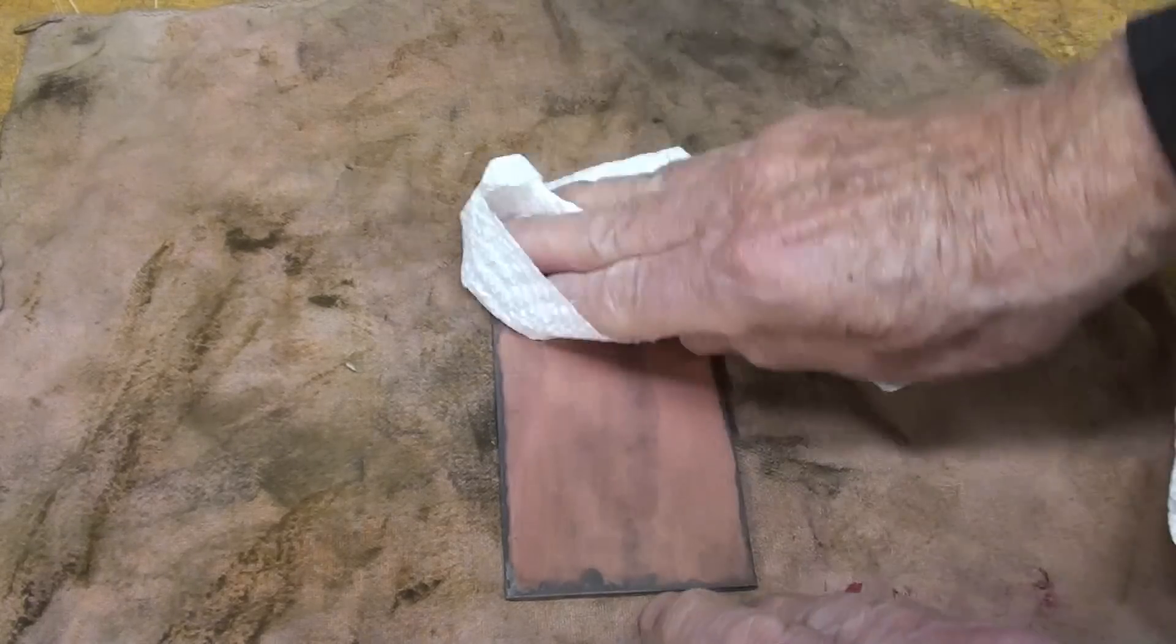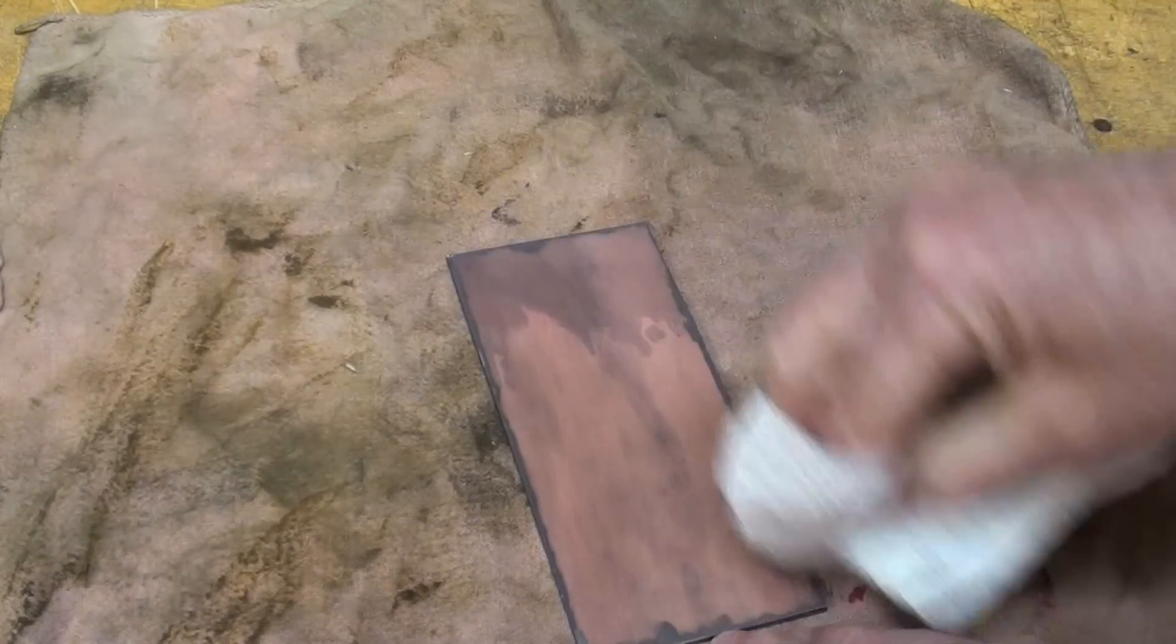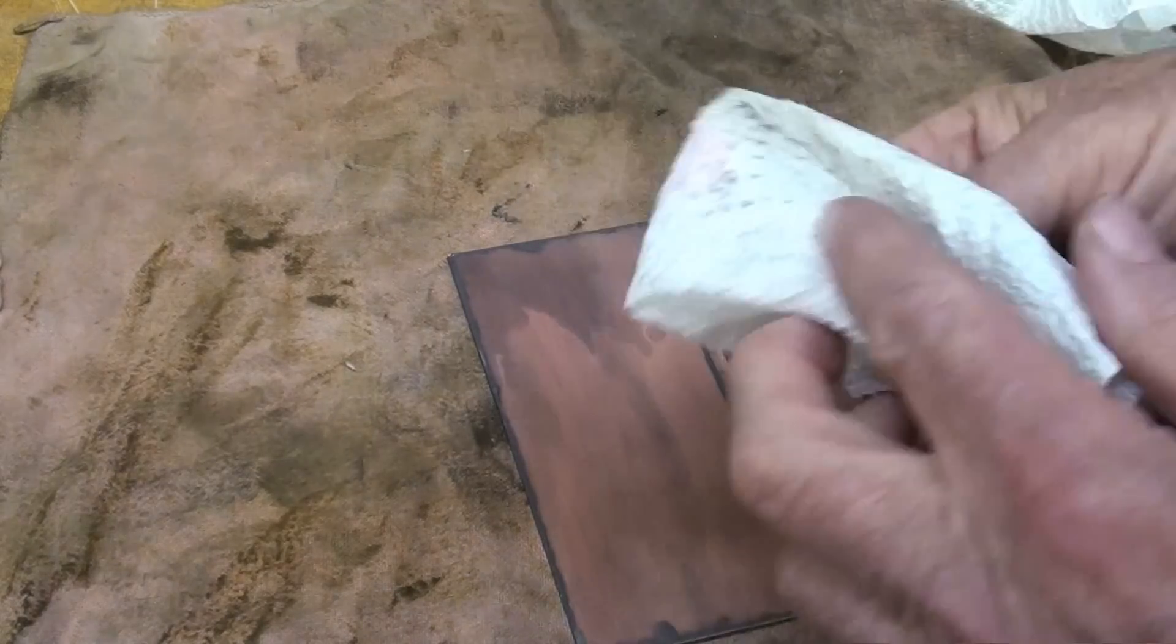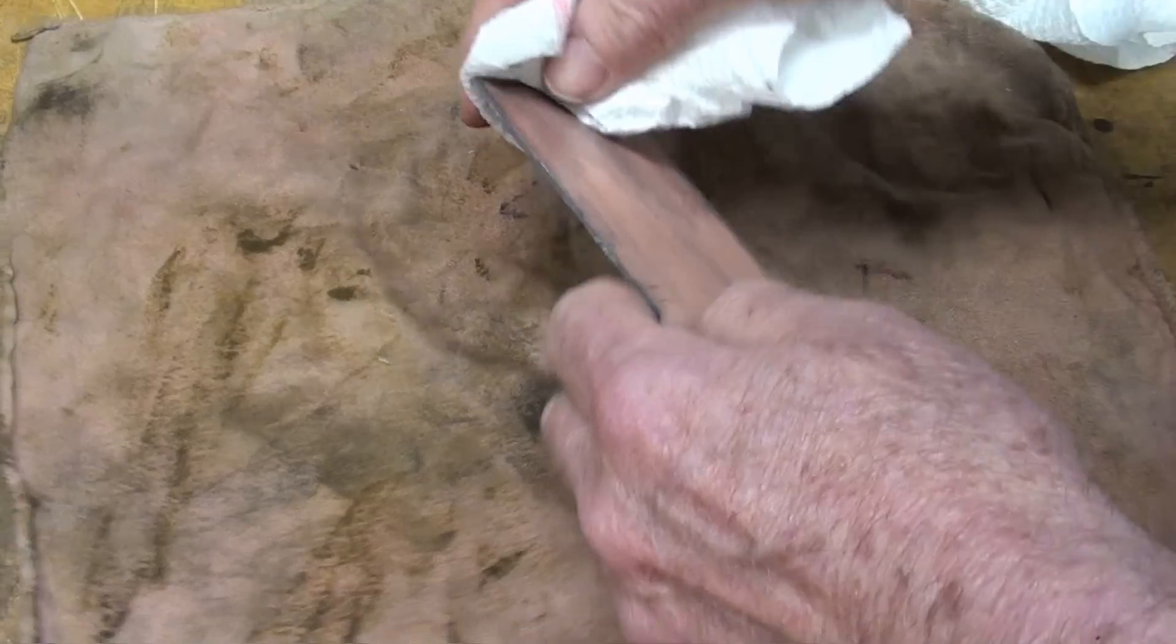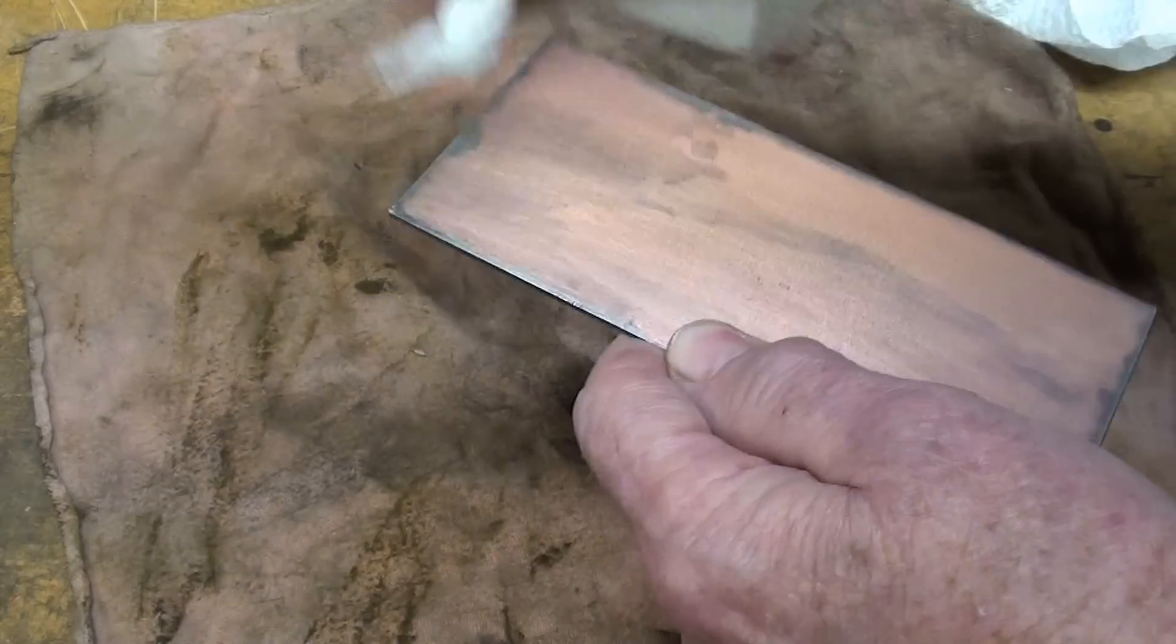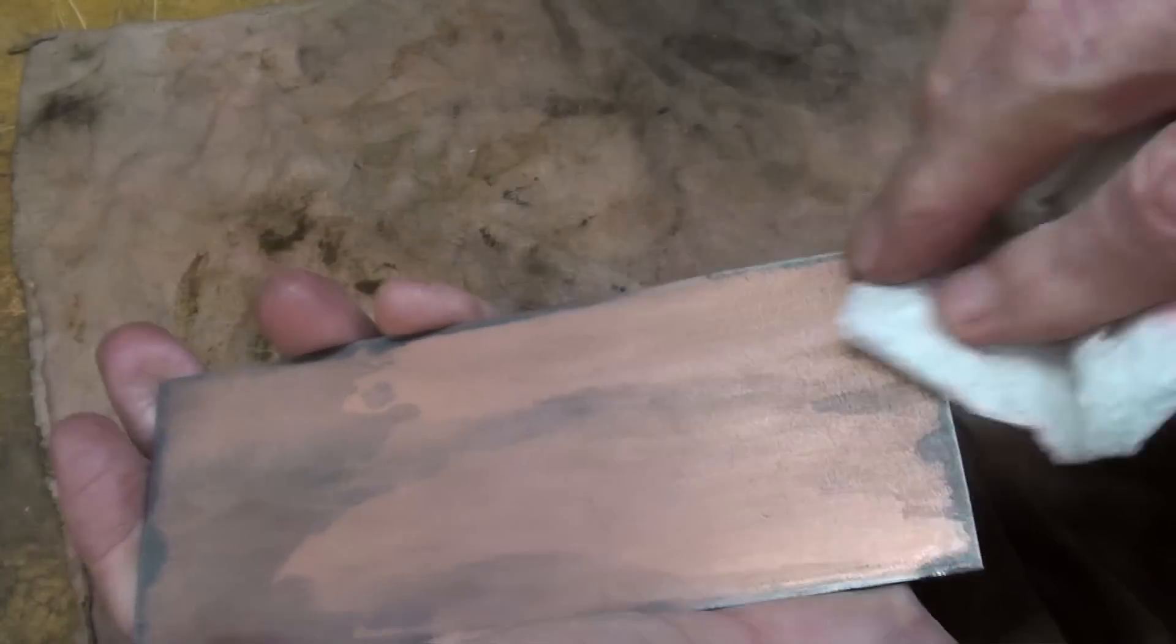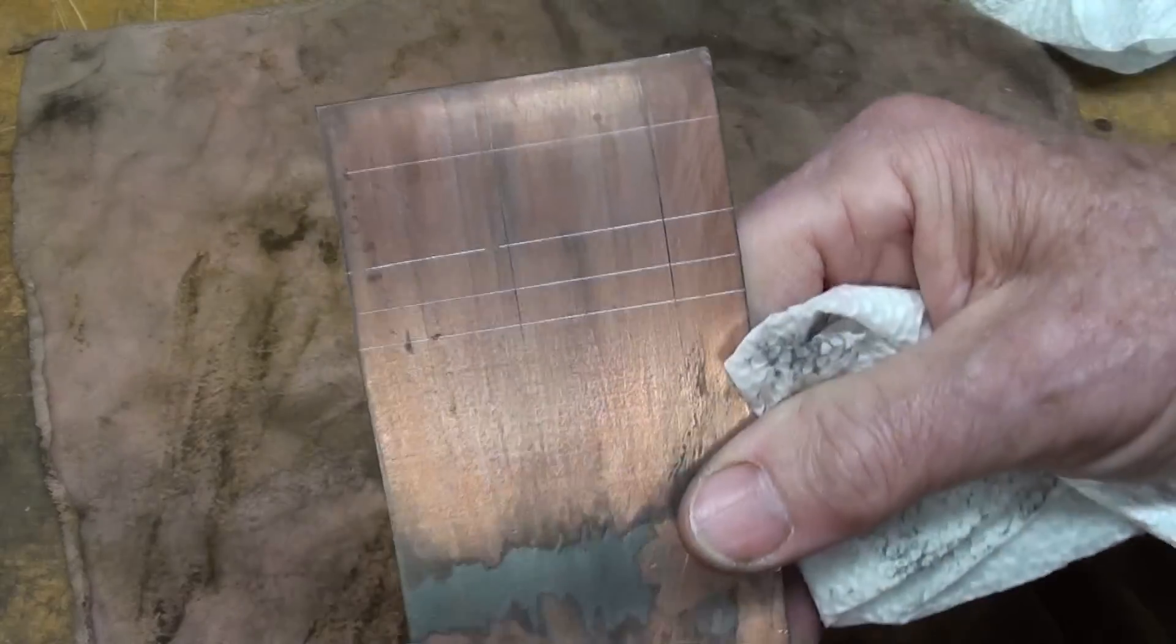Now I'm going to wipe it off with the bounty towel. I sure didn't get the edges very well did I. There's some alcohol. Is there any need to neutralize it? Probably not. It's ready for the layout, that's what I did on the backside.